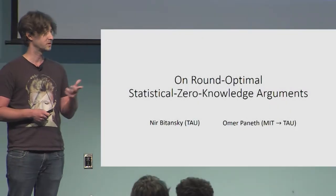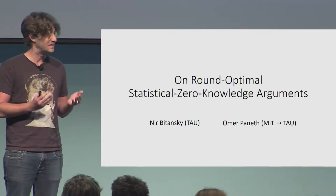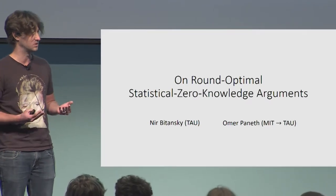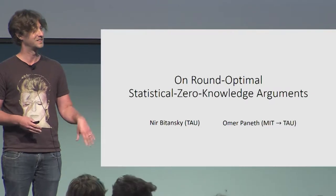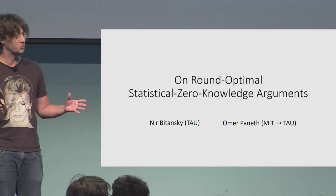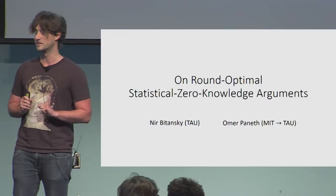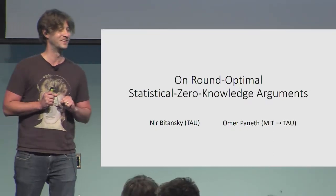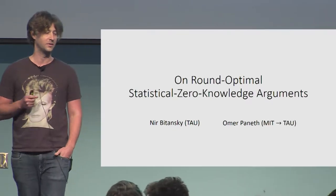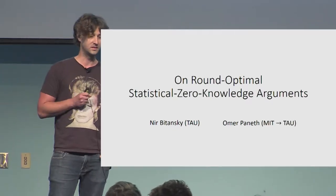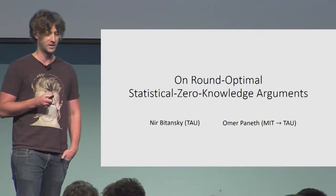So hi. First, to answer your question: the point is that you don't need the full power of the random oracle. There's a nice simple primitive here that you can define — a succinct proof with this incompressibility property — and it's enough. I'm Nir, and I want to tell you about around-optimal statistical zero-knowledge arguments, and this is joint work with Omar Paneth.